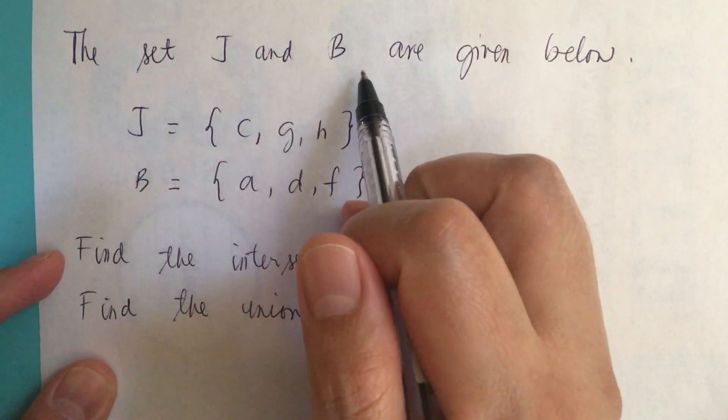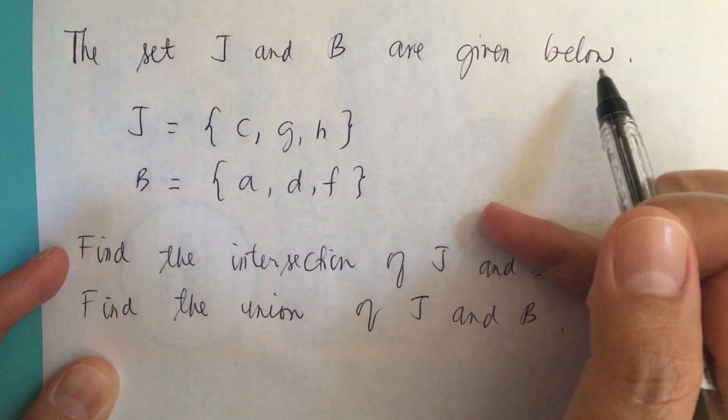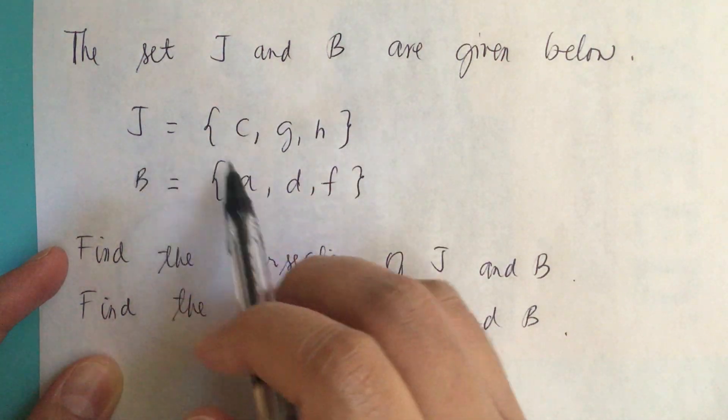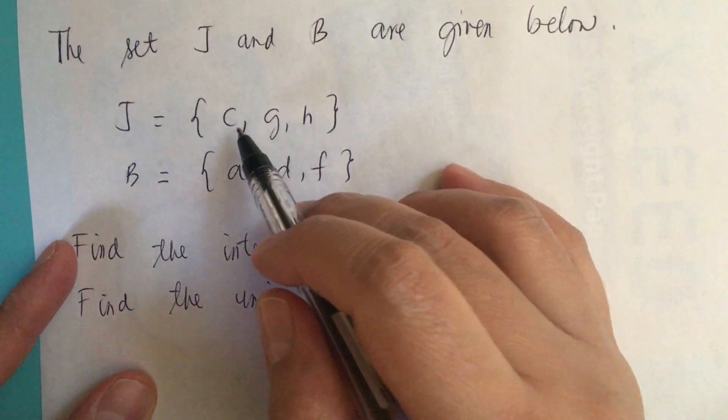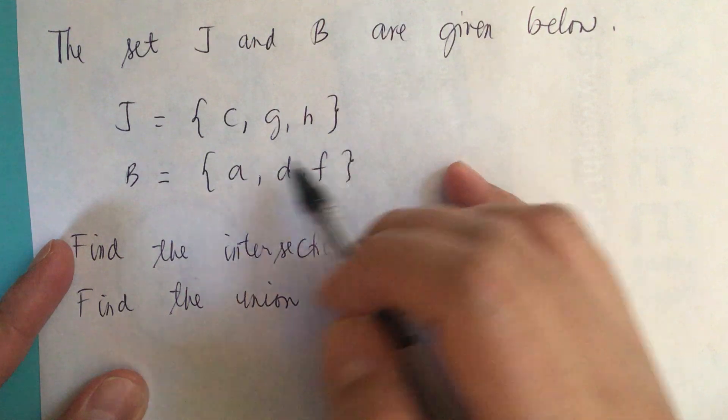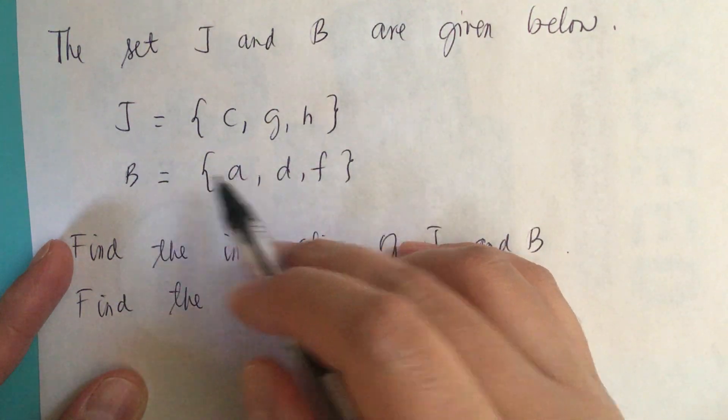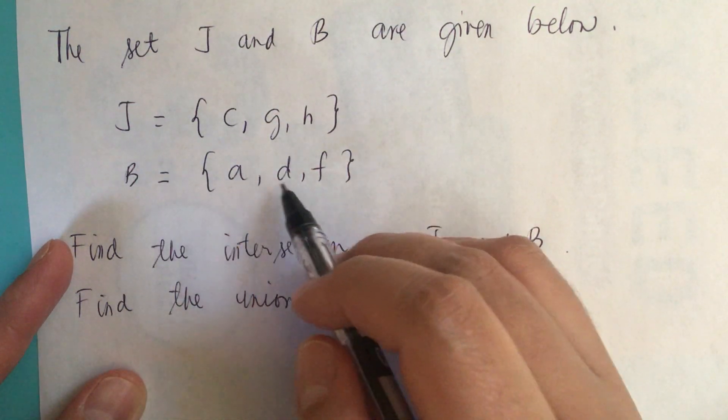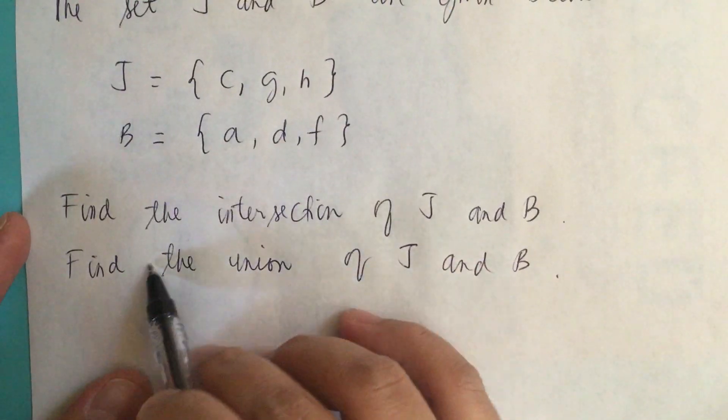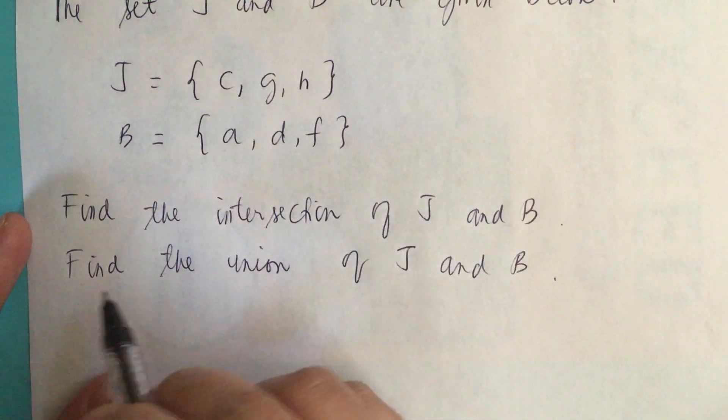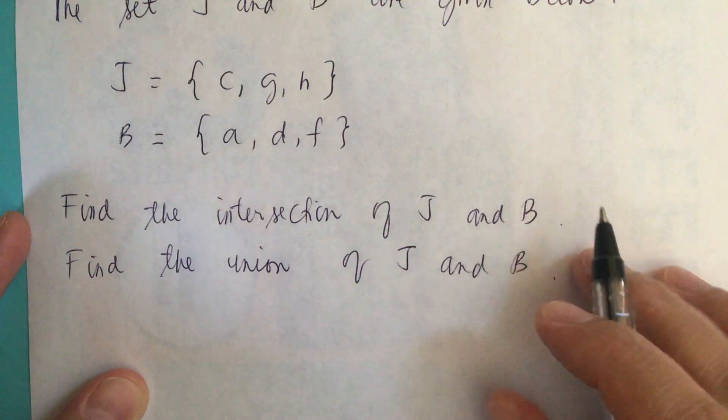The set J and B are given below. The set of J is equal to the set of C, G, and H. And then B is the set A, D, and F. Find the intersection of J and B, and find the union of J and B.